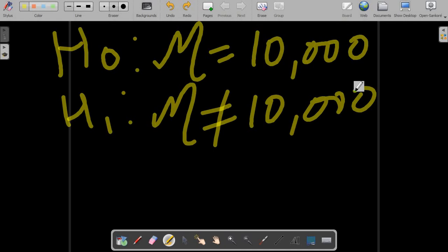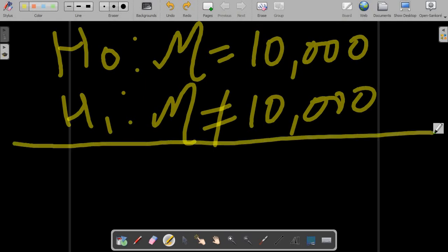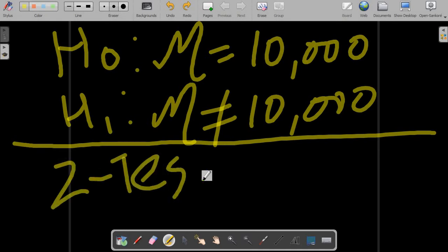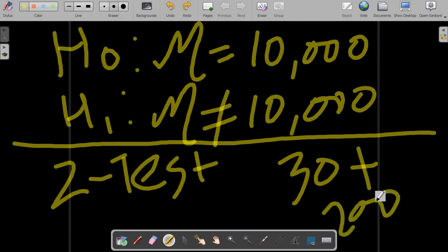Step 2: what kind of a statistic I will apply? I am going to apply the Z test. The reason, as already discussed, it is a parametric test. I have the parameters. The sample size is greater than 30. I have been given 200, so obviously this is much greater than 30.